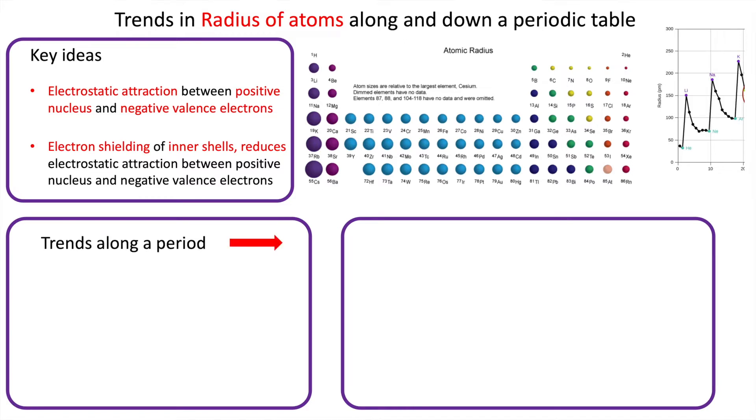So let's look at the trends along a period. The first thing is you can clearly see as you go along a period, the radius, the atomic radius, goes down.